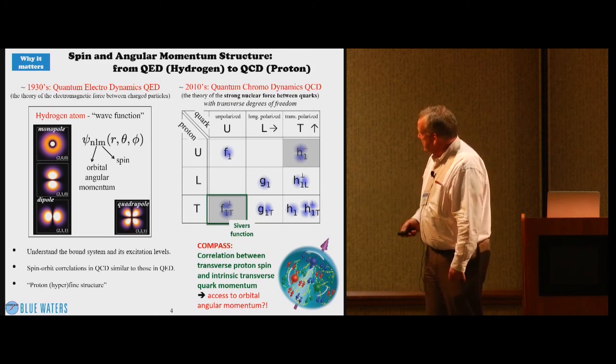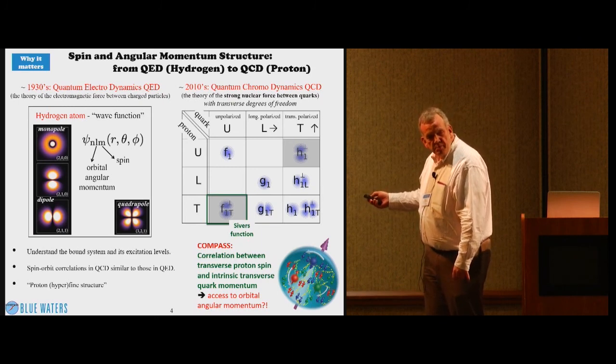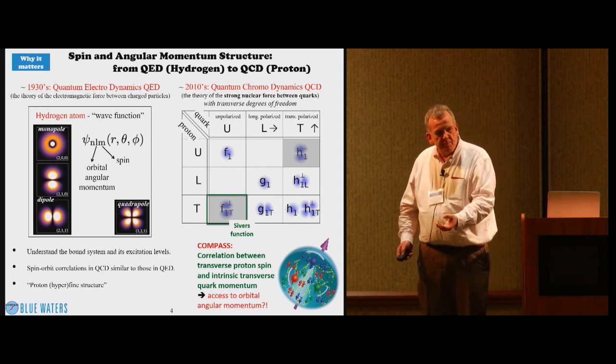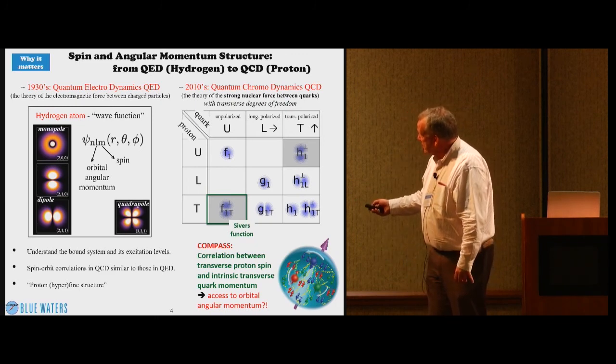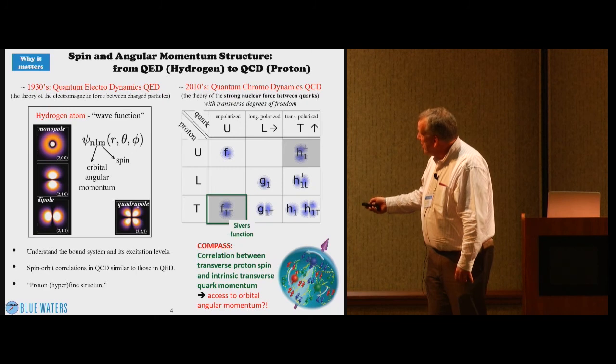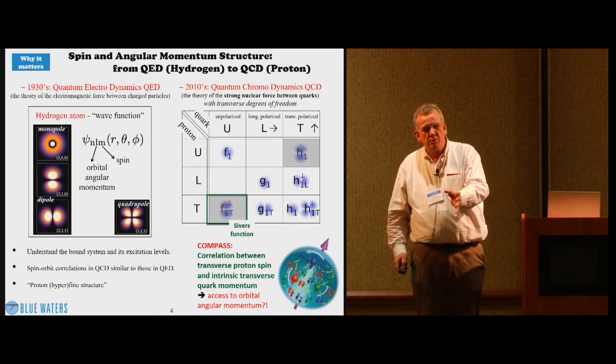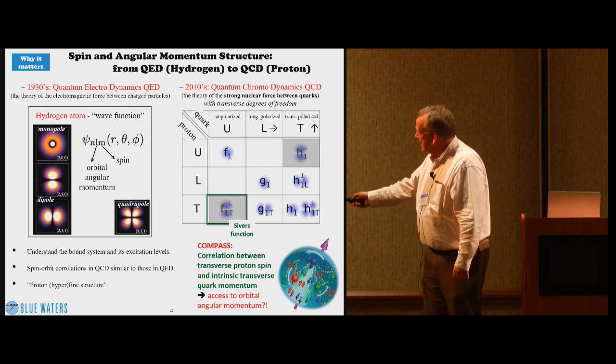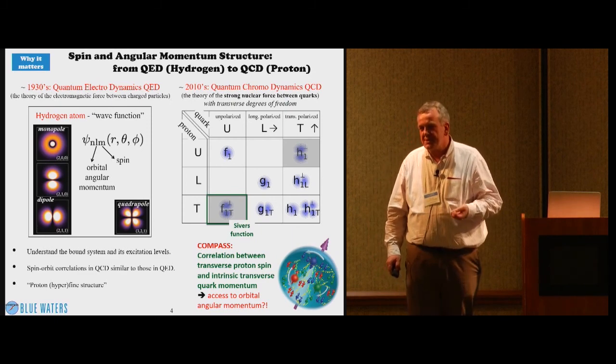Here are examples of these structure functions. For example, F1 is the momentum structure function. From it we can learn what fraction of the proton momentum an up quark or down quark or a strange quark carries. Then here, closer to what COMPASS does, is a function that correlates transverse proton spin with intrinsic transverse quark momentum. This is named the Sivers function after the Argonne theorist who postulated the existence of this function first in 1991.